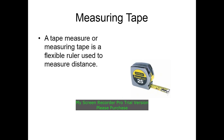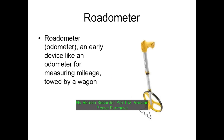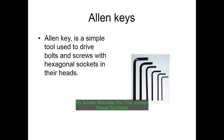A measuring tape, or tape measure, is a flexible ruler used to measure distance. A roadometer is an earlier device, similar to an odometer, used for measuring mileage.